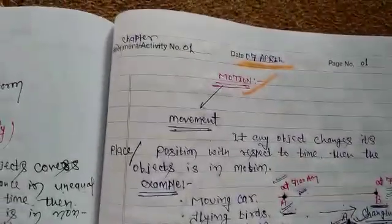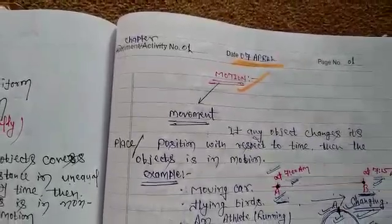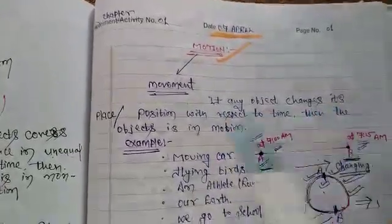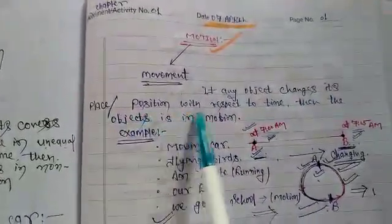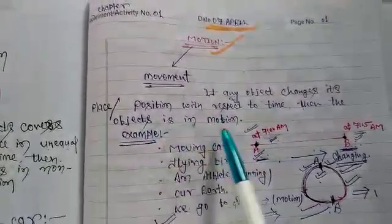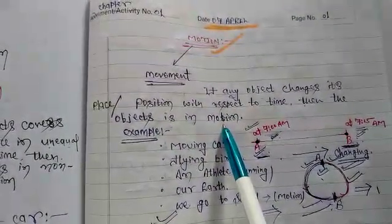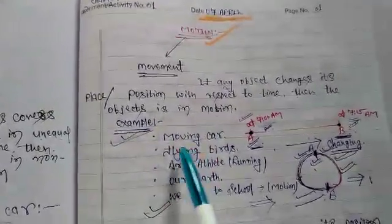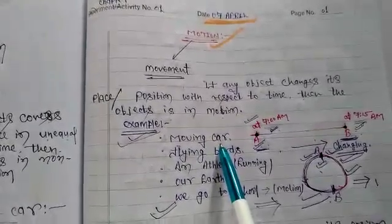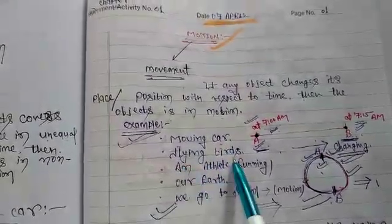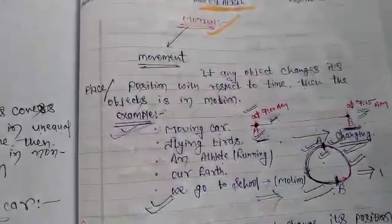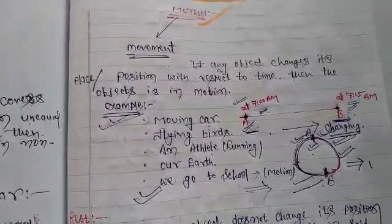What is motion and what is rest? Motion means movement. If any object changes its position or place with respect to time, then the object is in motion. To understand the definition of motion, we take some examples of a moving car. Moving car is always in motion, flying birds and athletes, or earth, or when we go to school, we use motion.